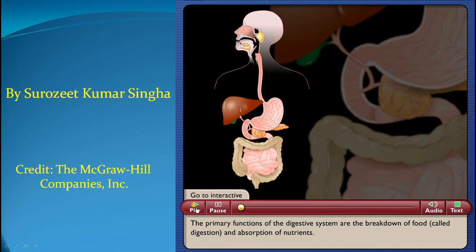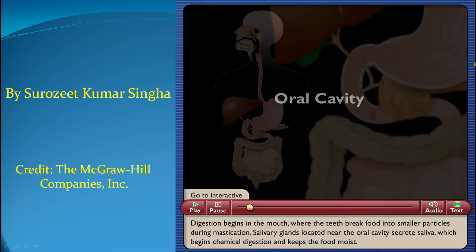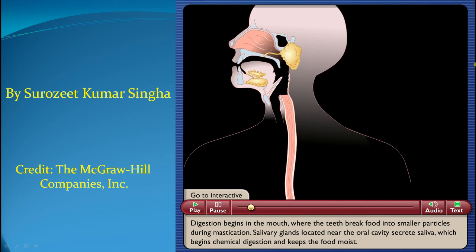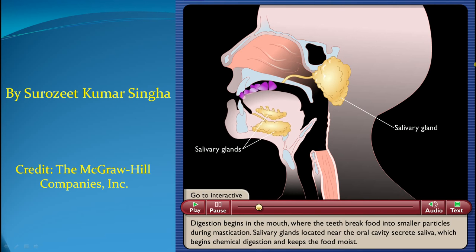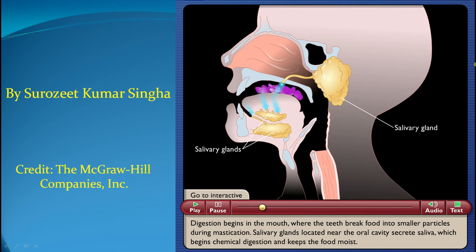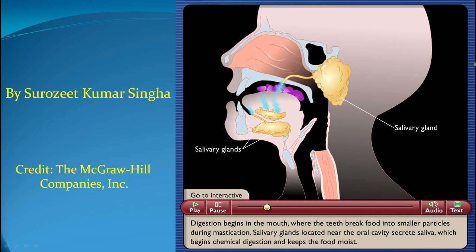The primary functions of the digestive system are the breakdown of food, called digestion, and absorption of nutrients. Digestion begins in the mouth, where the teeth break food into smaller particles during mastication. Salivary glands, located near the oral cavity, secrete saliva, which begins chemical digestion and keeps the food moist.